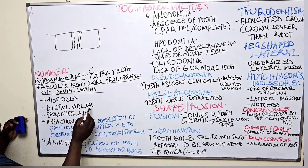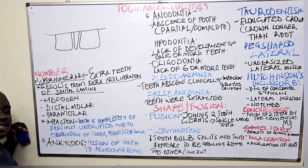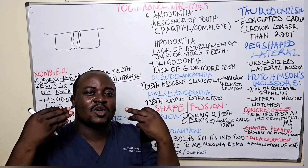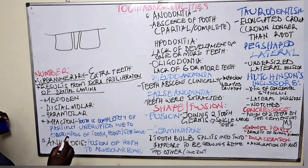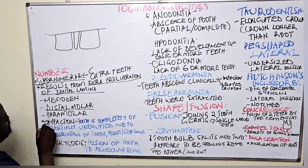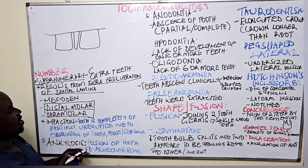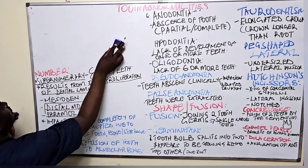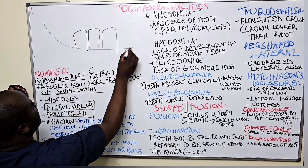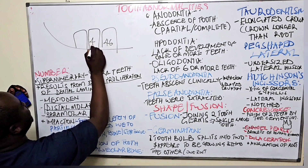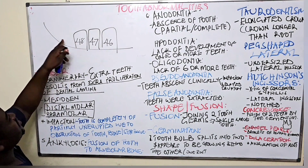For the case of molars, we can have supernumerary teeth called distal molars. In our nomenclature, if we have teeth 4-6, 4-7, and 4-8, a distal molar would be a fourth molar positioned distal — away from the midline — and in line with the other molars but further toward the end.